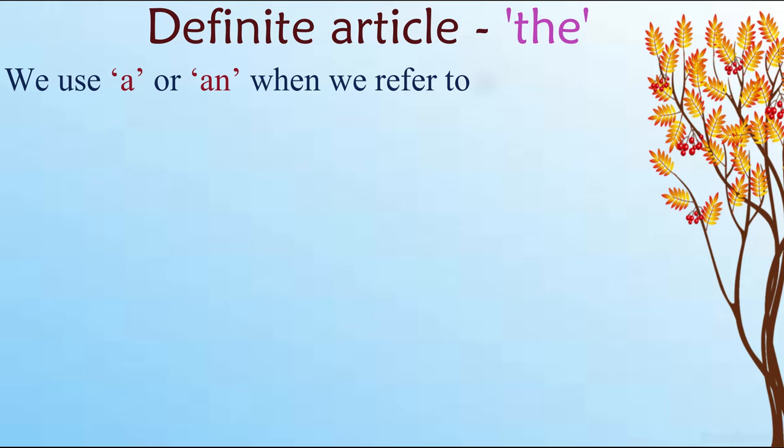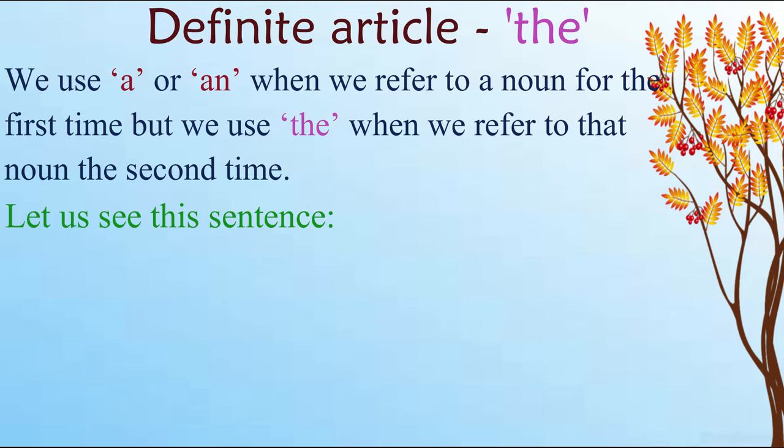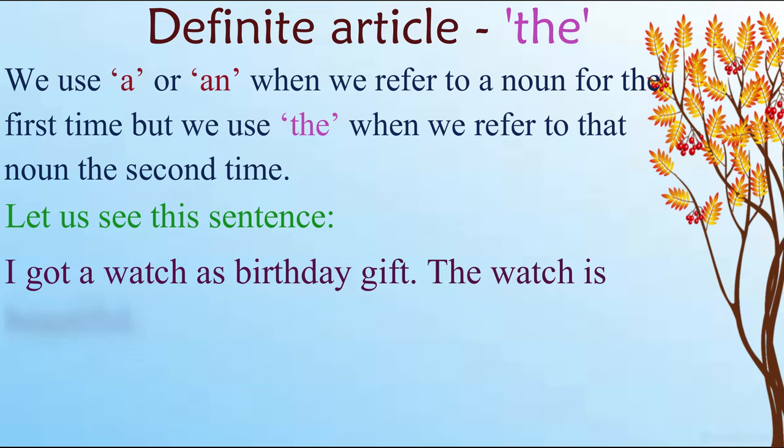We use a or an when we refer to a noun for the first time, but we use the when we refer to that noun the second time. Let us see the sentence: I got a watch as birthday gift. The watch is beautiful.